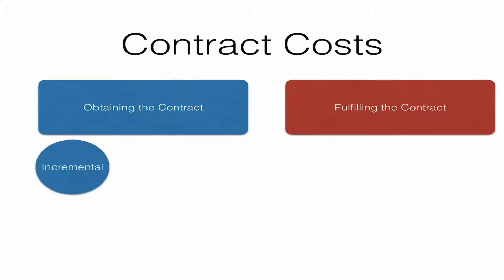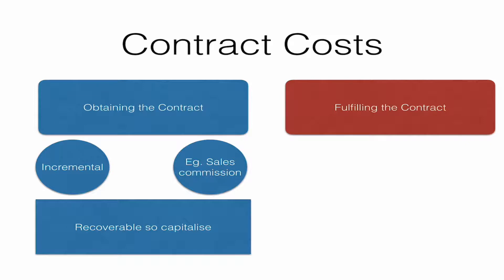For obtaining the contract, the costs must be incremental — costs that would not have been incurred had that individual contract not been obtained. For example, sales commission, which wouldn't have been paid unless you got the contract. These are shown separately, and because they're recoverable from the customer, you capitalise them — unless you're going to amortise them away in less than a year, in which case you don't have to bother.